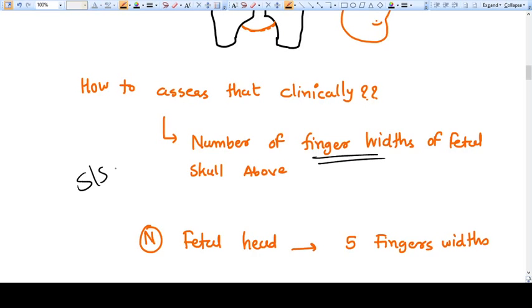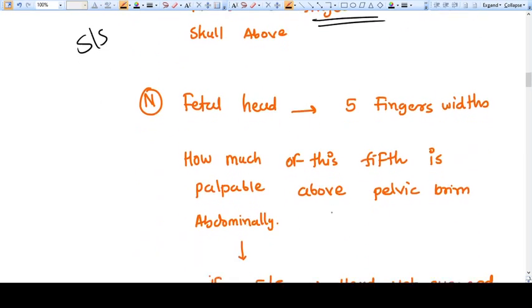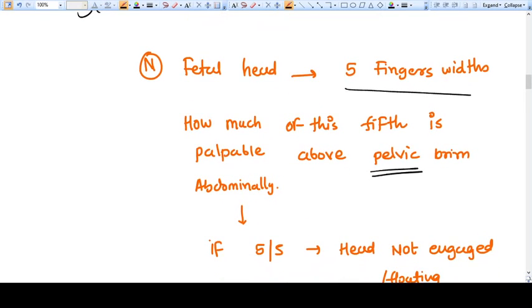This is called the fifth method or Crichton method. The normal fetal head is considered as five finger widths of an adult person. Now, how much of this fifth is palpable above the pelvic brim abdominally when you are examining the patient?